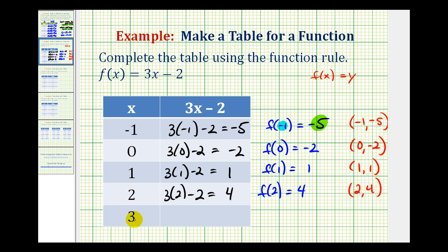And the last input is x = 3. So we'd have 3 times 3 minus 2. 9 minus 2 is 7. So f(3) = 7, which means the graph of our function would contain the point (3, 7).